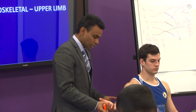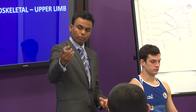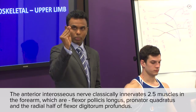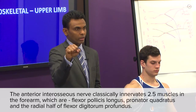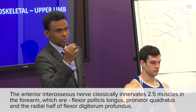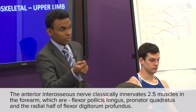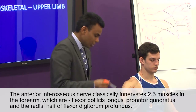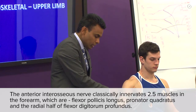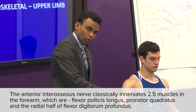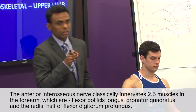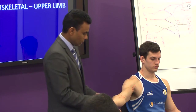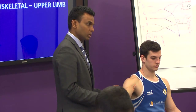That deep branch goes and supplies the flexor pollicis longus to the thumb, flexor digitorum profundus, and pronator quadratus. So the three deep muscles in the forearm are supplied by the anterior interosseous nerve. Then the median nerve on its own continues in the forearm and goes under the carpal tunnel.